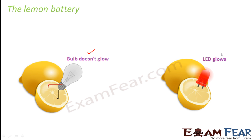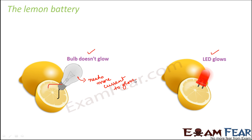But actually that is not the case. When you insert an LED, the LED glows, which shows that there is a source of current. And what is that source of current? It is nothing but the lemon itself. Lemon is able to provide current, but it provides insufficient current to glow the bulb, because the bulb needs more current to heat the filament enough to produce heat and light. So lemon acts as a battery, but it cannot produce as much current as a regular battery. That is what we refer to as the lemon battery.